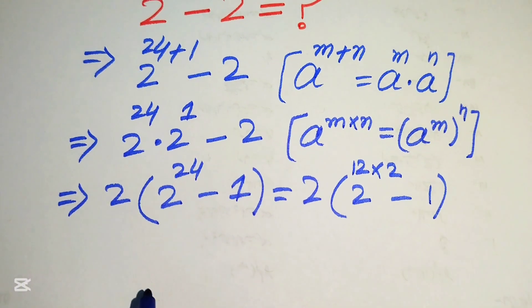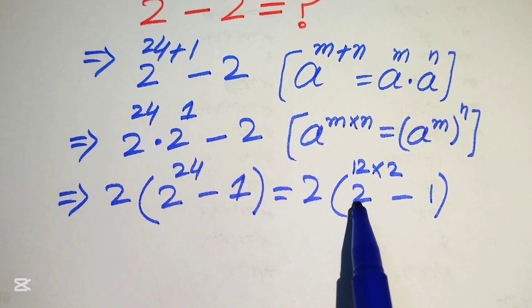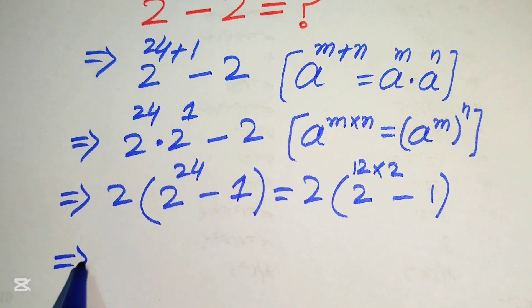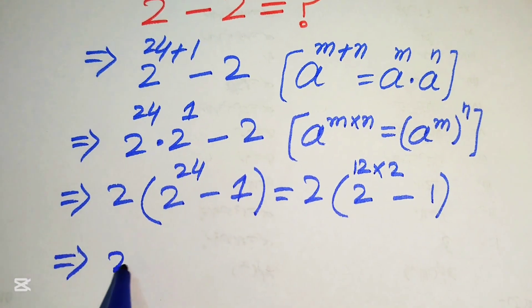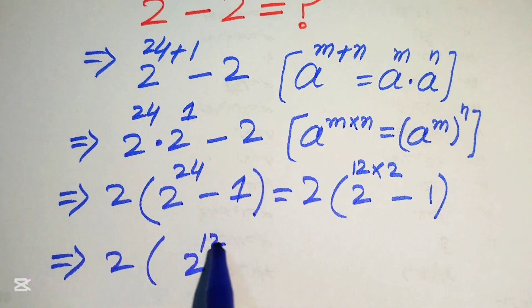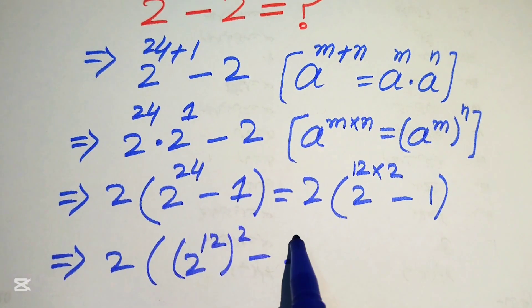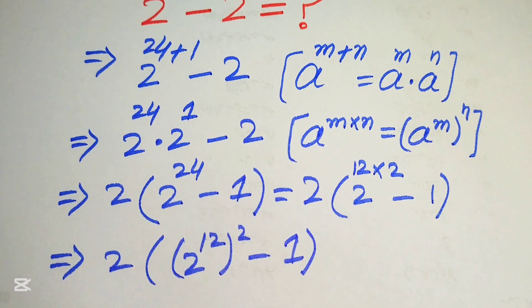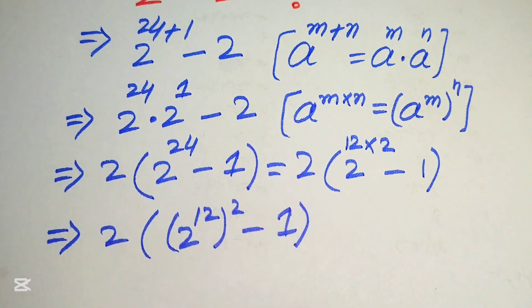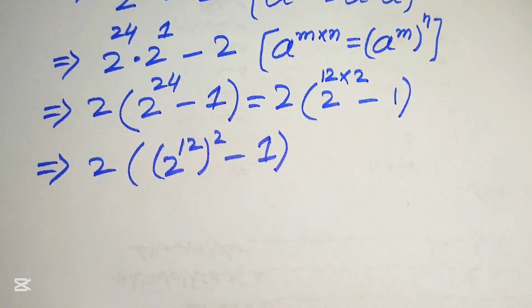According to this rule, we simplify the term: we write 2 to the power of 12 times 2 as (2 to the power of 12) squared, minus 1.